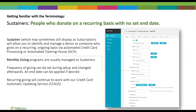Sustainers are people who donate on a recurring basis with no set end date. Just so you're aware, it may sometimes still display as subscription — there are certain areas where that hasn't fully changed over in the system — but that usually means sustainer. These are people recurring on an ongoing basis via automated credit card processing or ACH, which is when you pull directly from a bank account.